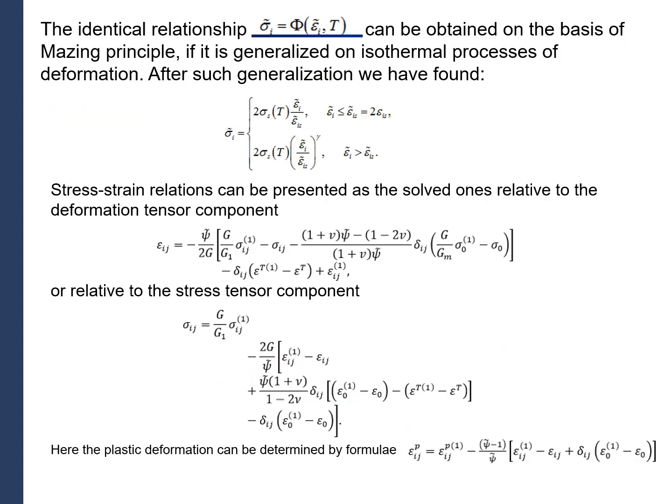The identical relationship sigma can be obtained on the basis of the Mazing principle, if it is generalized on non-isothermal processes of deformation. After such generalization, we have found sigma. Stress-strain relations can be presented as the solved ones relative to the deformation tensor component or relative to the stress tensor component.